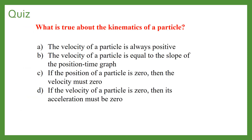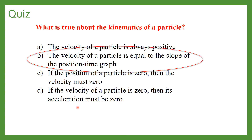Question: Which statement is true about the kinematics of a particle? (A) The velocity of a particle is always positive. (B) The velocity of a particle is equal to the slope of the position-time graph. (C) If the position of a particle is zero, the velocity must be zero. (D) If the velocity is zero, the acceleration must be zero. The answer is B — velocity equals the slope of the position-time graph.